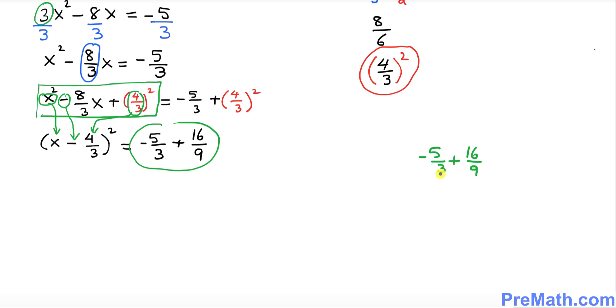You see the denominators are 3 and 9. We want to make the same denominator so I can divide. I'm going to multiply and divide by 3. So that's going to give us negative 15 over 9.